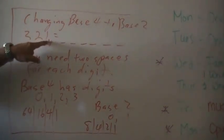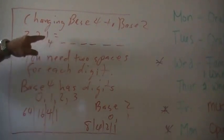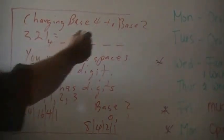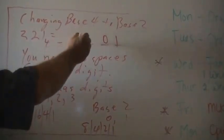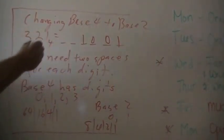And then what you do is for each digit, you change it to base 2. 1 is just 0, 1. 2 would be 1, 0. And 3 would be 1, 1.